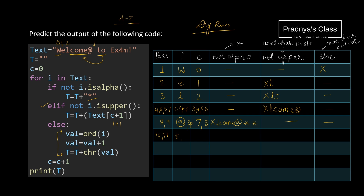First we get T, then we get O. The value of C updates to 9 and 10. Here is the previous string: X, L, C, O, M, E, @, *, *, star, star. In this condition we consider the next character in the string, which is O. In the next pass after O we have space — so we will not write anything, but remember it is space.